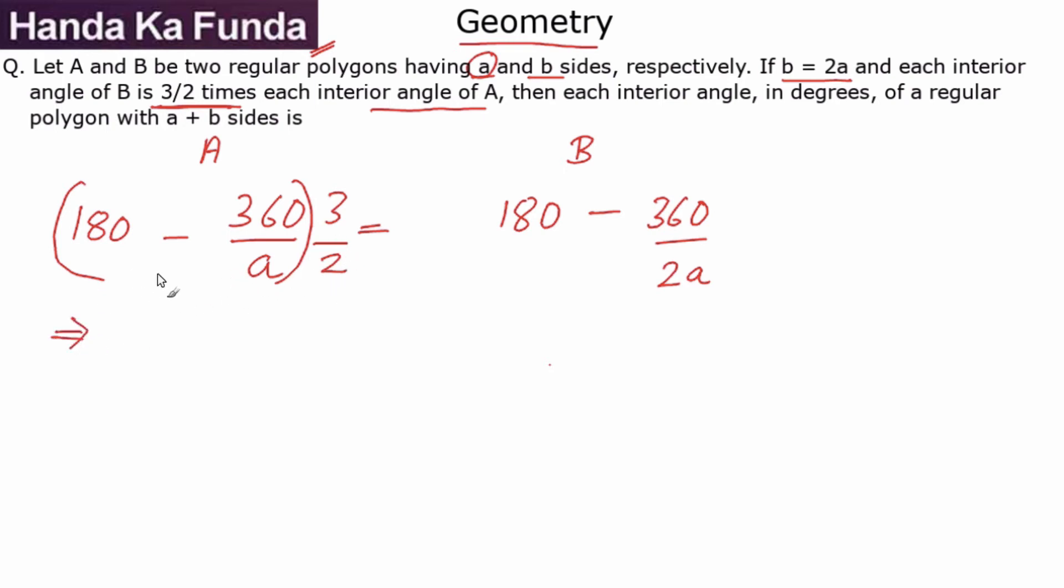So, what do we have here? So, 3/2 of 180 is 270 minus 3/2 of 360. So, that is 180 into 3, 540 by A is equal to 180 minus 360 by 2 becomes 180 by A. So, what do I have here? 270 minus 180 becomes 90 is equal to 540 minus 180 is equal to 360 by A which gives me the value of A as 360 by 90 or 4.